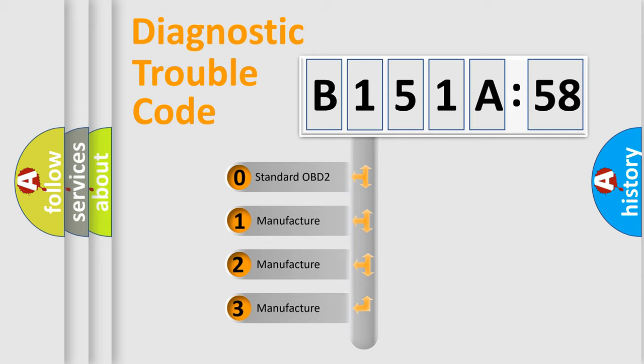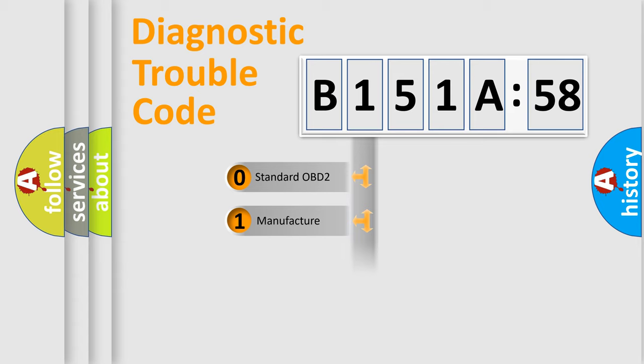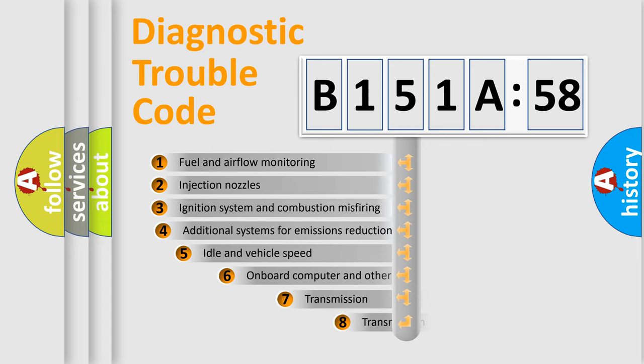If the second character is expressed as zero, it is a standardized error. In the case of numbers 1, 2, 3, it is a more prestigious expression of the car-specific error.